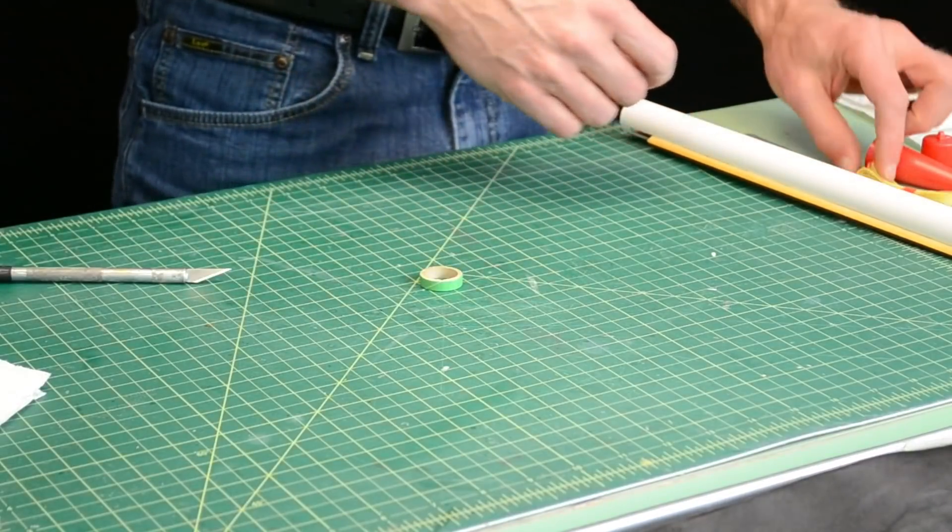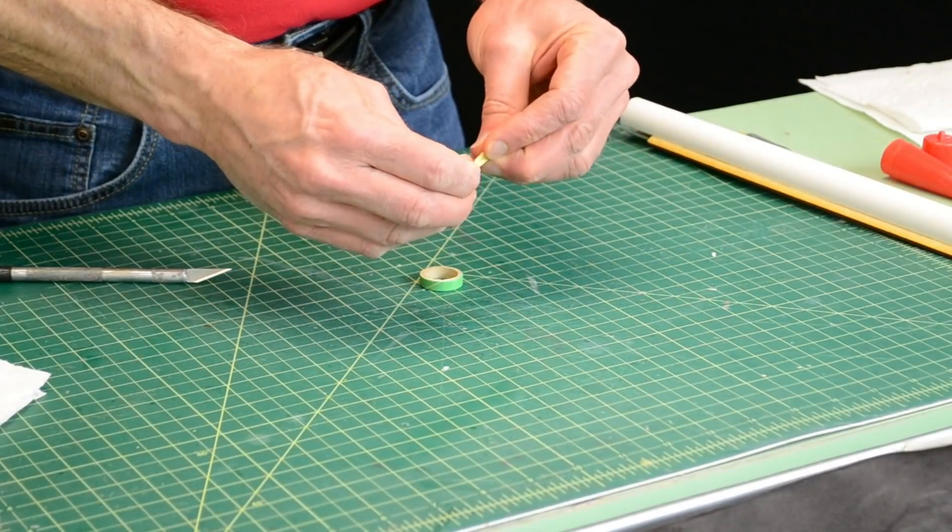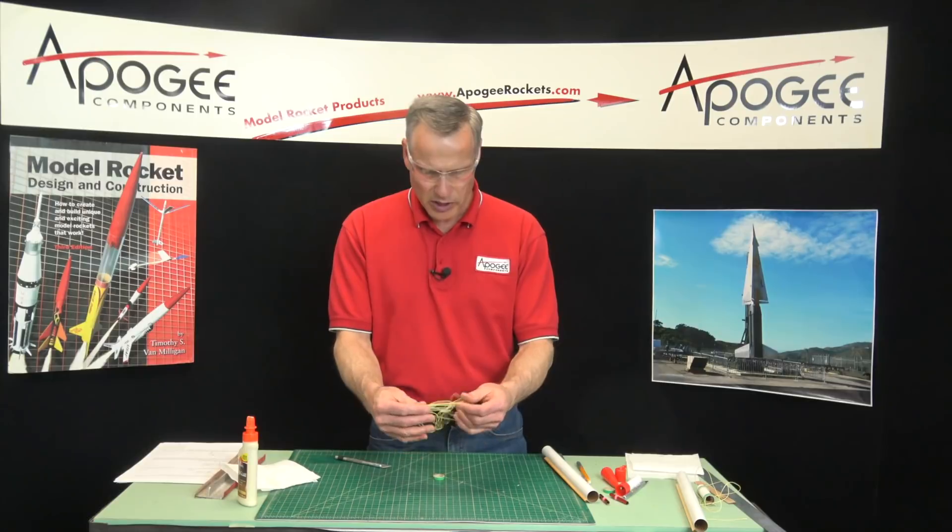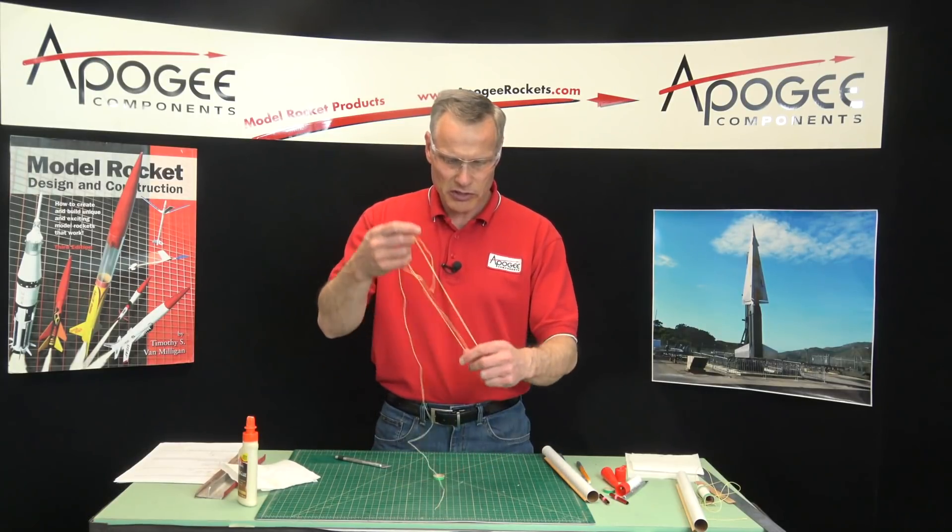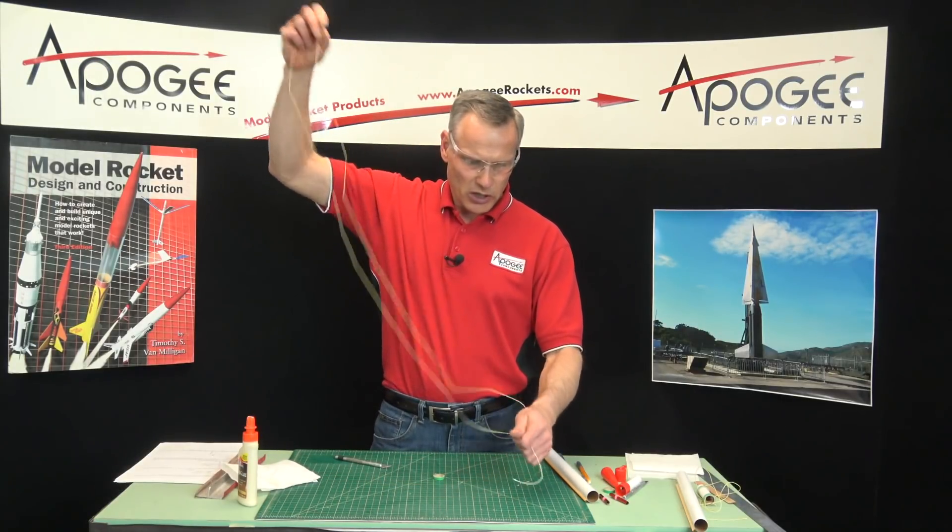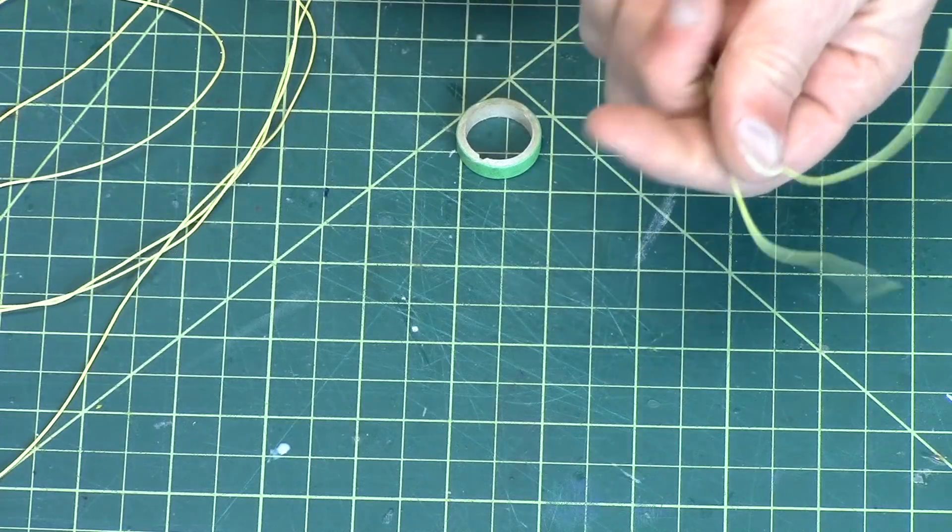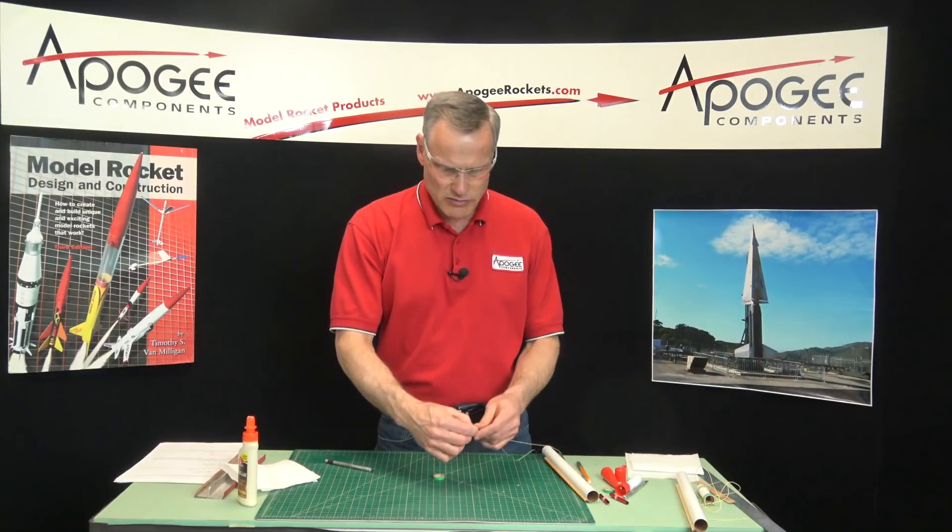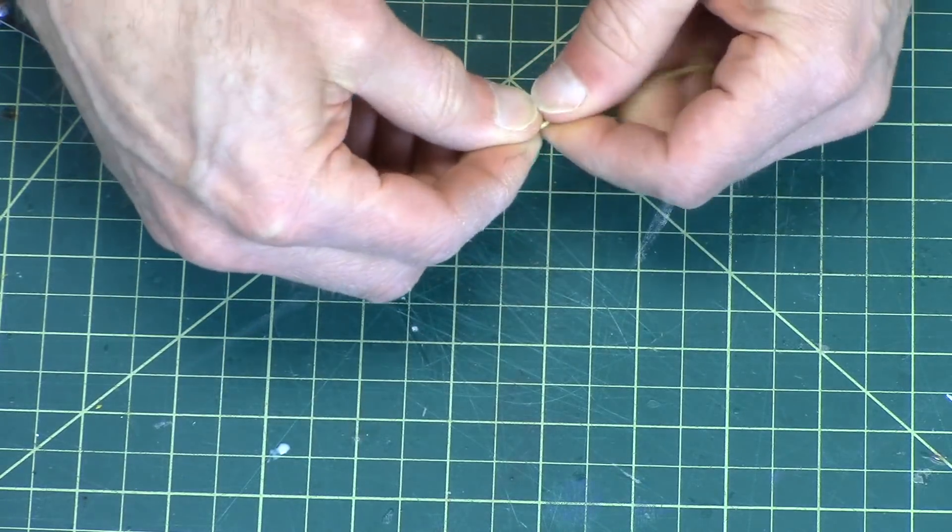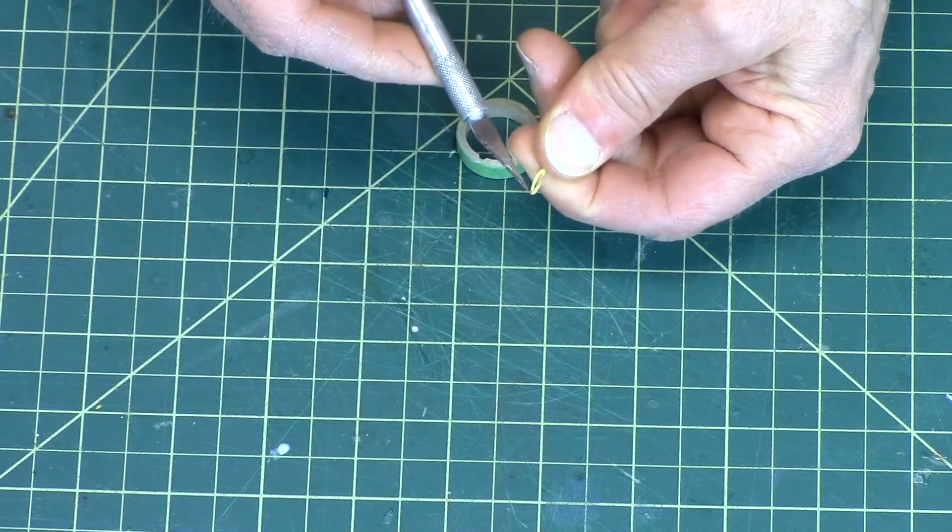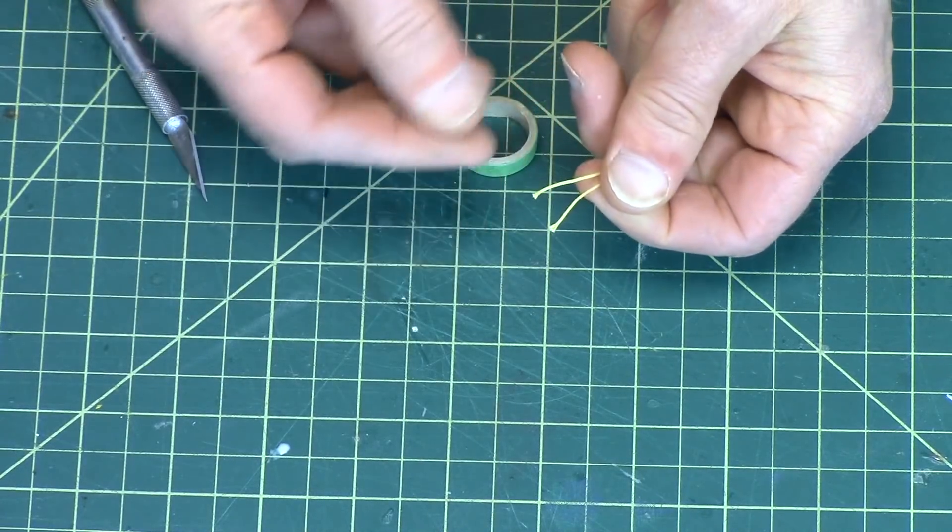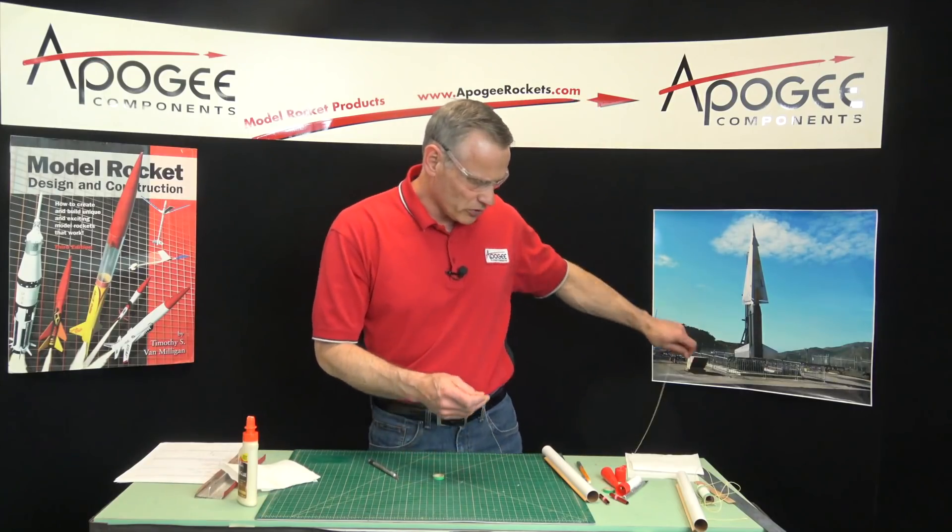So you're going to take the shock cord and remove the little plastic tape, and we're going to cut this in half because this is going to go for two of the strap-on boosters. So just line up the ends, stretch it out, and see that little loop there. Just run your knife through there and just saw back and forth until it cuts, just like that. So we're only going to need one of those, one for each of the strap-on boosters.